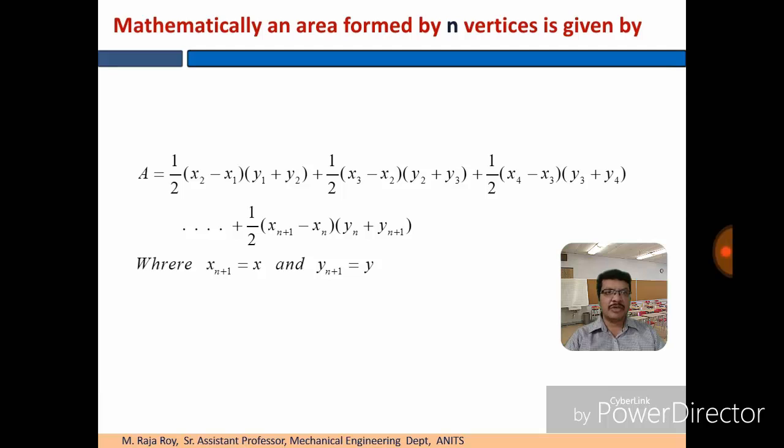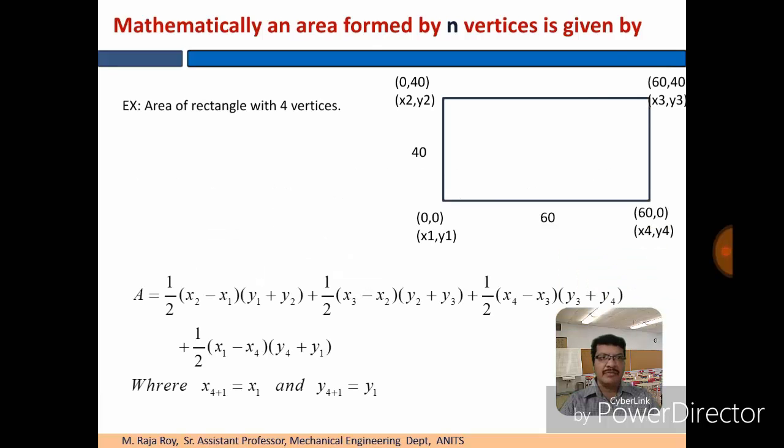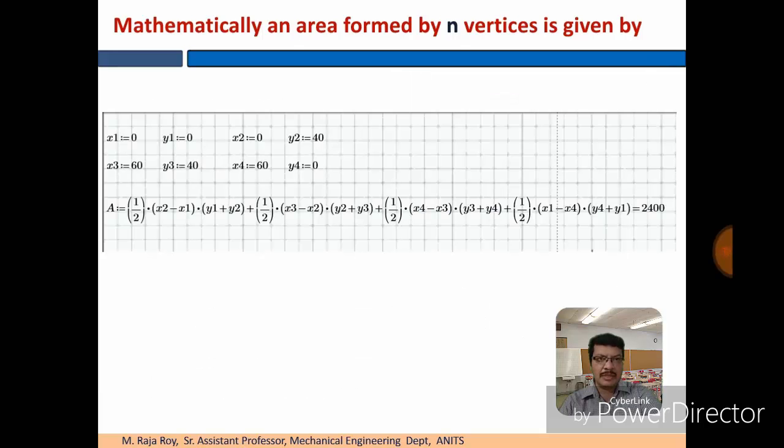This is the generalized equation to find the area. Finding the area of the rectangle, assume the length of the rectangle as 60, height as 40. Then you will get the coordinates as shown here. Substitute the coordinates in this equation. Then automatically you can find the area. We are getting the area 2400. 60 times 40 equals 2400. That means the generalized equation what we have considered for calculation of area is verified.